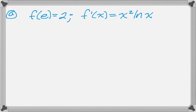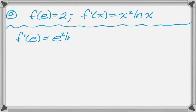So we're told that f of e is 2, and we're also told what f prime of x is. So for part a, all we have to do is write the equation on the tangent line. So we evaluate this.